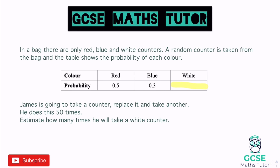When I look at these probabilities in a table, I like to think of these decimals as percentages in disguise. So 0.5 is 50% and blue is 0.3, which is 30%. We can also work this out directly in decimals: 0.5 + 0.3 gives us 0.8.